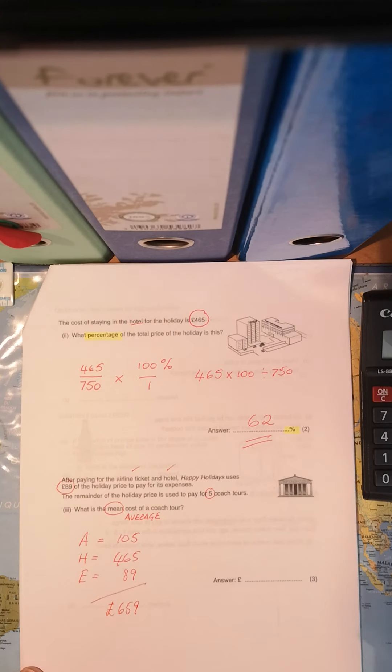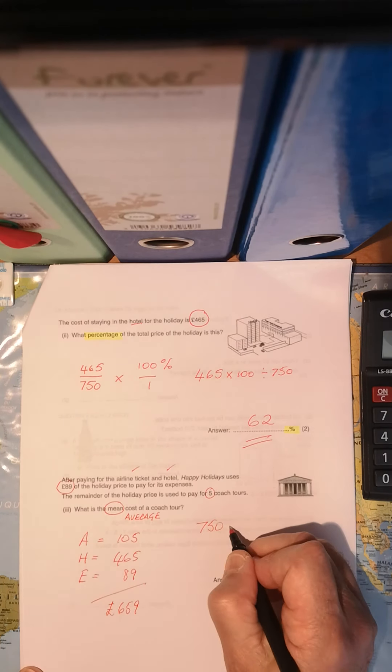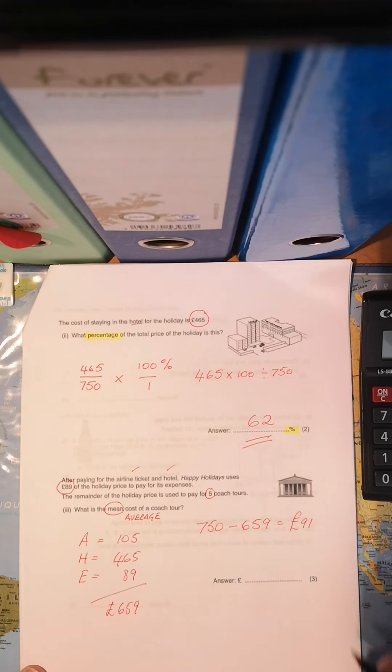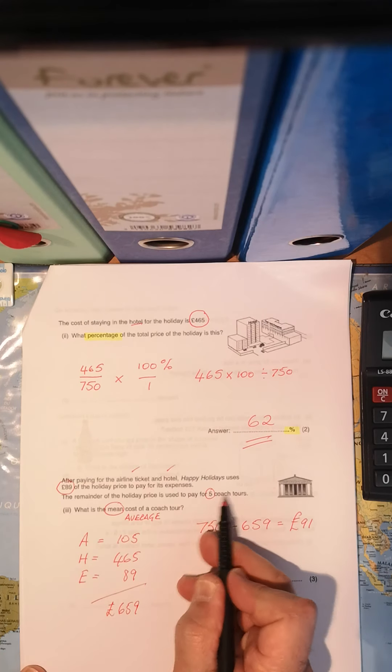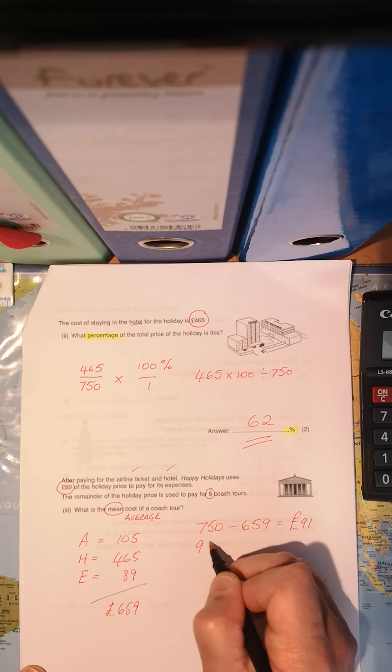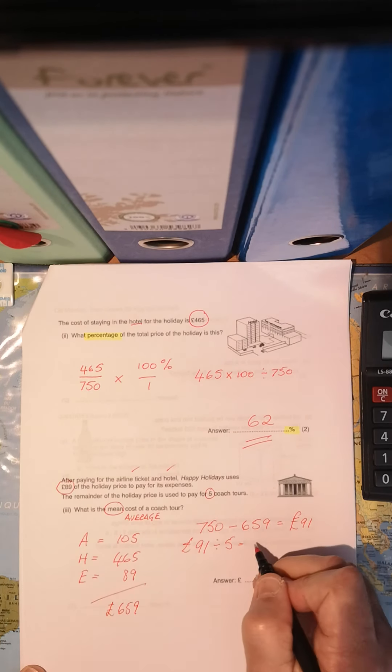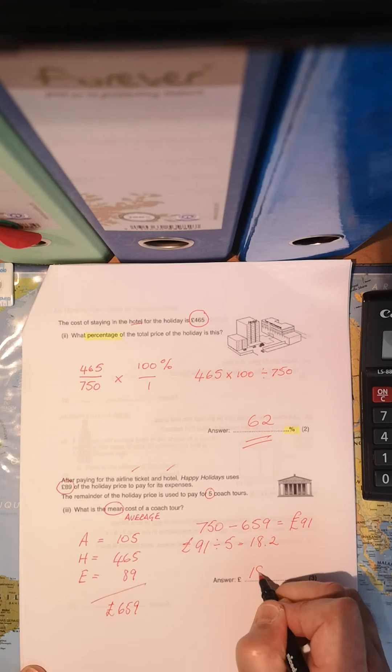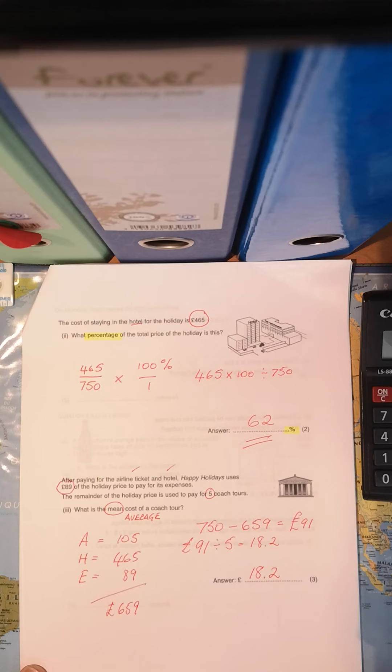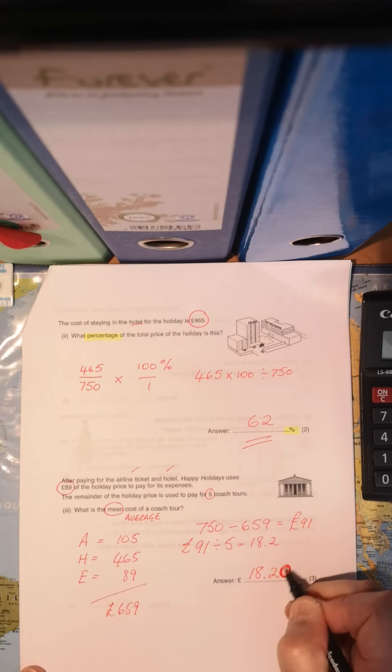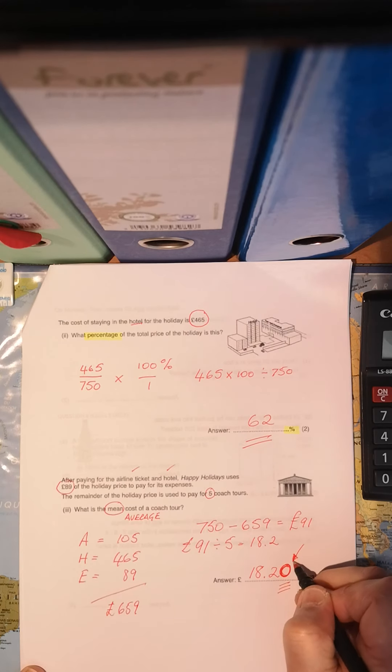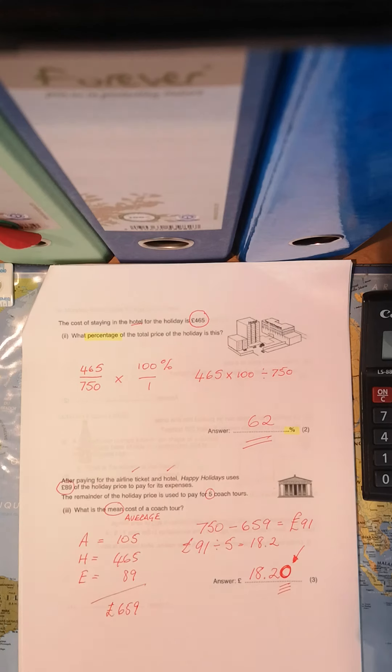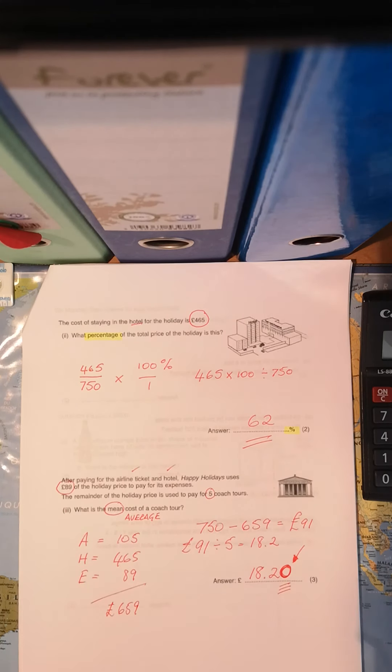So now we've got to go to the airline, which cost 105. The hotel cost 465. And then the expenses, 89 pounds. And when we total that, we get a grand total of 659 pounds. What was the grand total? The main figure that we paid for the whole holiday, 750. We subtract the 659 from that, and we're left with 91 pounds. But that's not my answer because I've got five coach trips to pay for. So 91 pounds divided by 5 is going to be, and when you get your calculator out, it becomes 18.2. But that's not my final answer. No, I must include that zero. Now, a lot of times we forget to put that zero in, and the examiner will unfortunately subtract a mark. So don't forget that zero. So there we go. That was the average price for each coach tour.